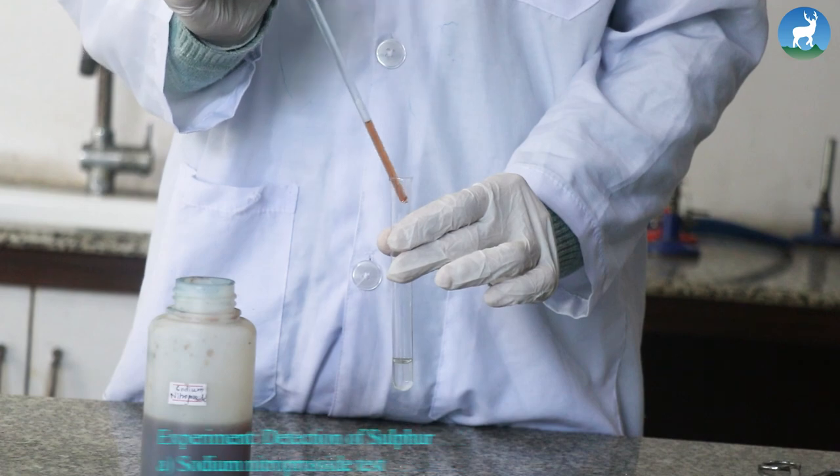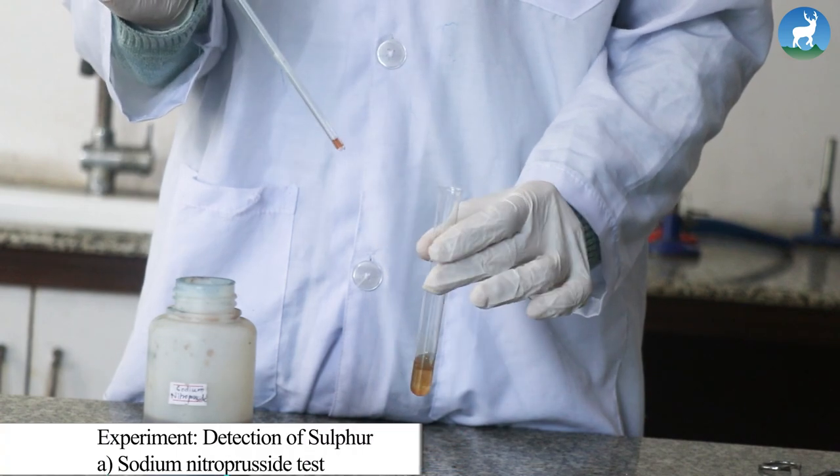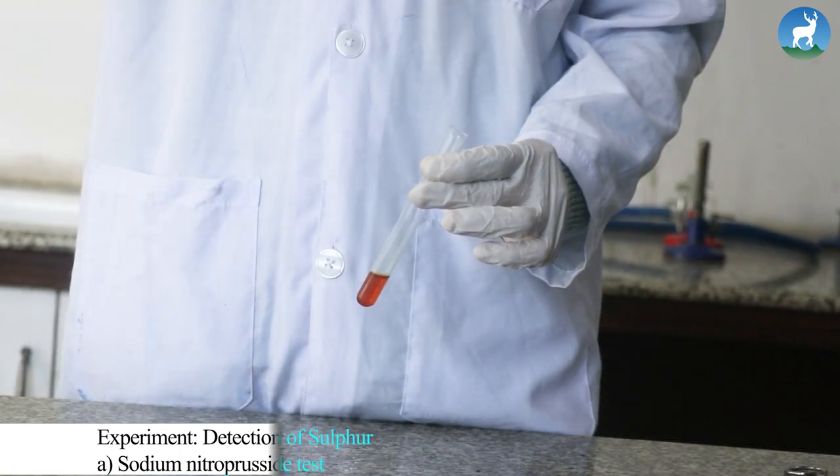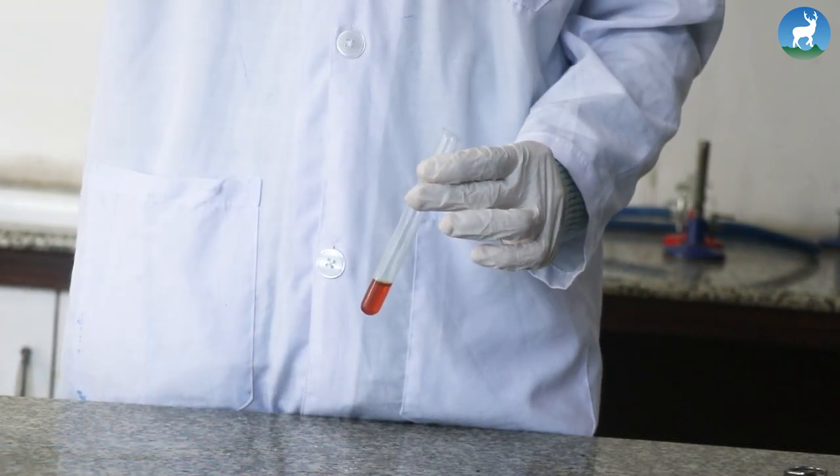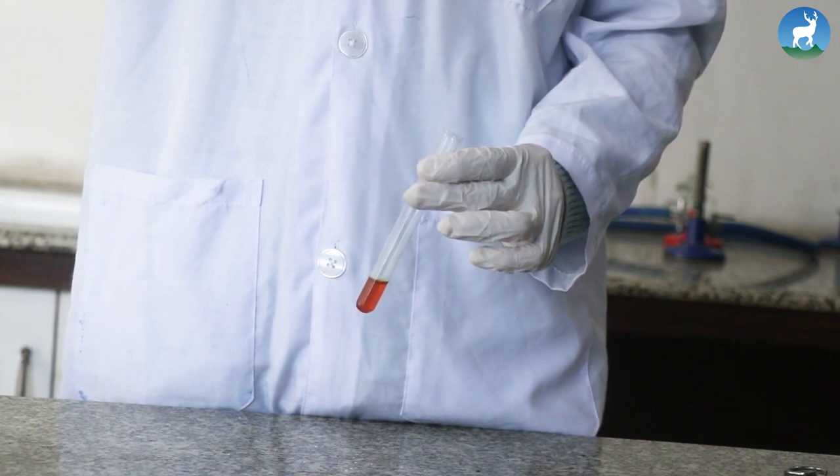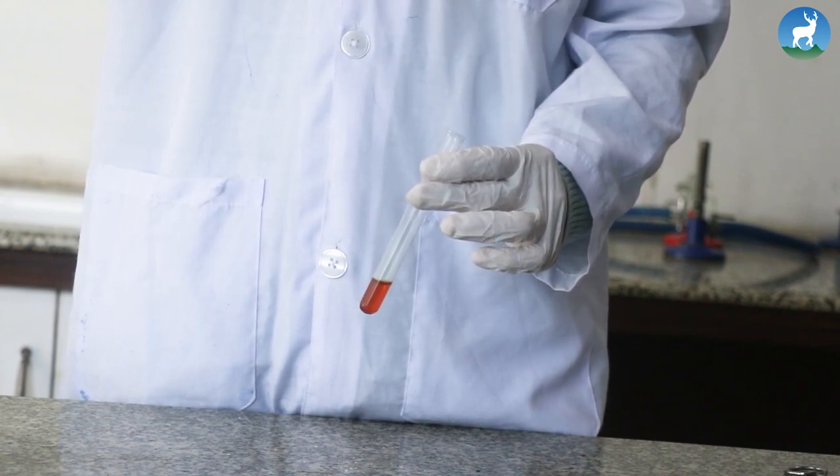Add a few drops of sodium nitroprusside solution to about 1 ml of sodium extract. The appearance of violet or purple coloration indicates presence of sulfur. Since there is absence of violet or purple color, it is proved that sulfur is absent in the given solution.